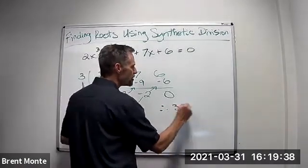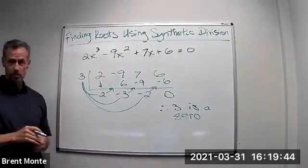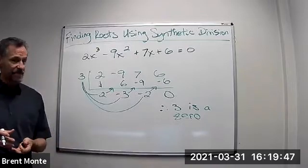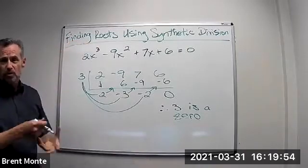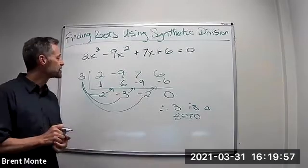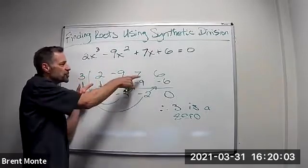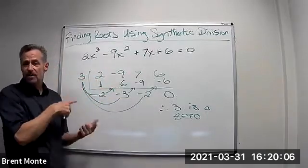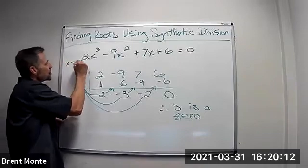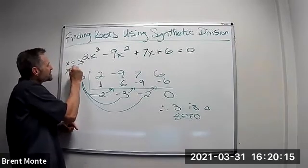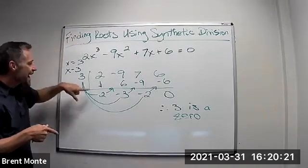So therefore, 3 is a zero of this polynomial — it's one of the solutions. What's really nice about this is that we have an x cubed, so we know there are three roots. We don't know if they're all rational or they could be complex, but we know there are two more roots. And what's nice is we don't have to start off with 2, negative 9, 7, 6 again. We've actually simplified it. Since x equals 3 is one of my roots, I know x minus 3 was the factor. So what I really did is factor this by x minus 3.